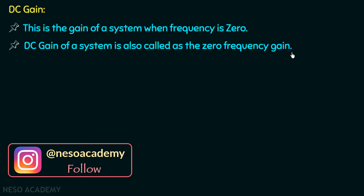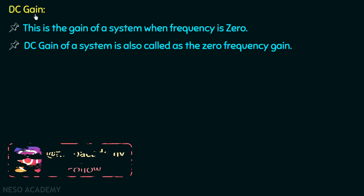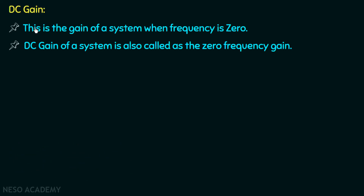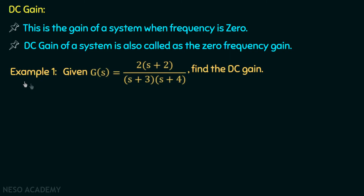Suppose we are having a transfer function representing a system and we put s equal to zero in the transfer function, then we will have the zero frequency gain, and that zero frequency gain is regarded as the DC gain of the system. Let's understand this with the help of an example. Given G(s) equal to 2 multiplied with (s plus 2) over (s plus 3) multiplied with (s plus 4), find the DC gain.